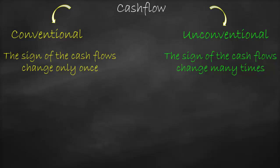With unconventional cash flow, the sign changes many times — the negative sign appears more than once during the project. For conventional cash flow, we could have a one-year construction period with a negative cash flow in year one, then positive for all remaining years. Or a two-year construction period with negative cash outflows for the first two years, then all positive afterwards — no cash outflow during the project.